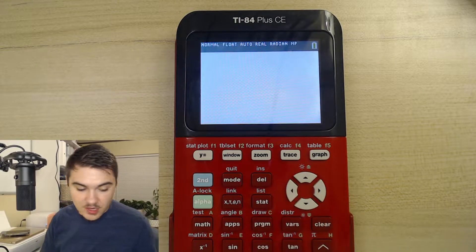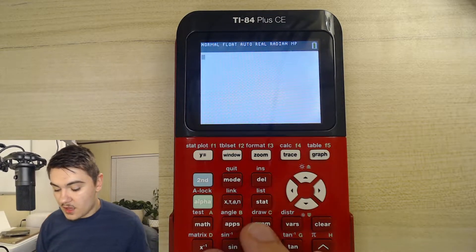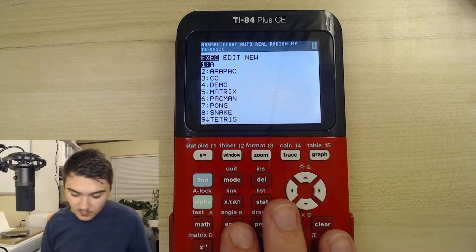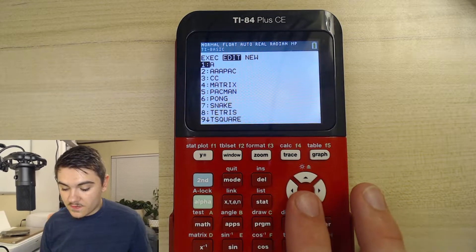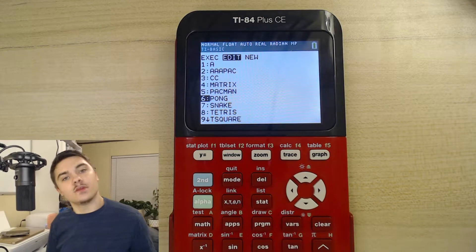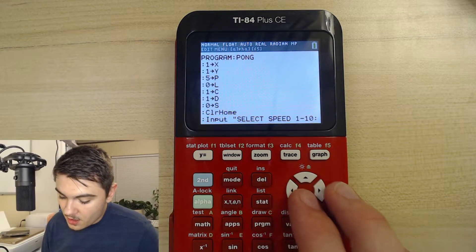So this is what we're going to do. We're going to go ahead, go get your calculator, go turn it on. Press the program button. And you're going to scroll over to the edit menu and we're going to go into the Pong program editor. So press enter.